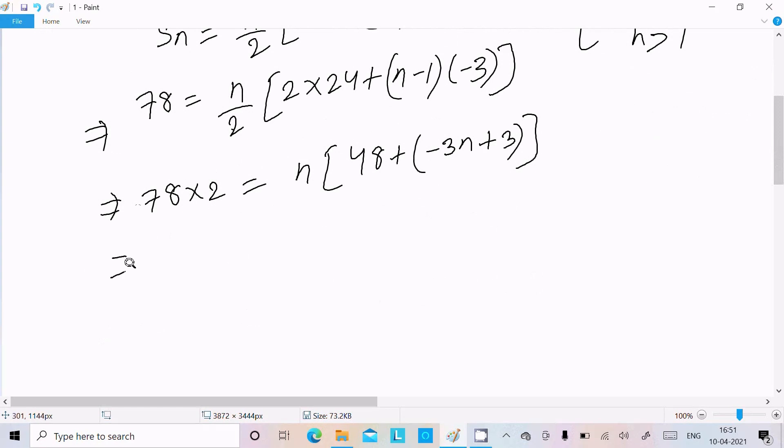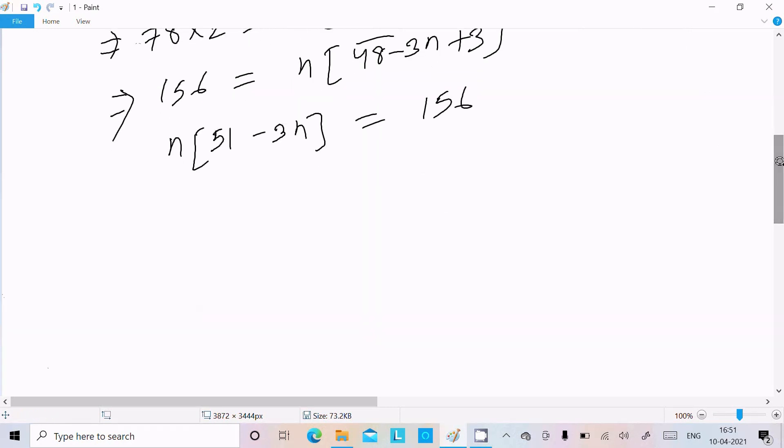78 times 2 is 156. Here, this is n. This is 48 plus minus minus 3n plus plus 3, or we can just do the reverse: 48 plus 3, that is 51, and minus 3n equals 156.